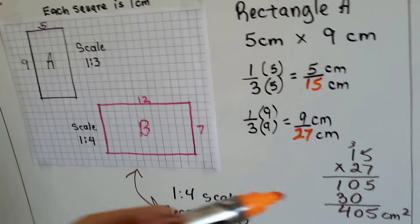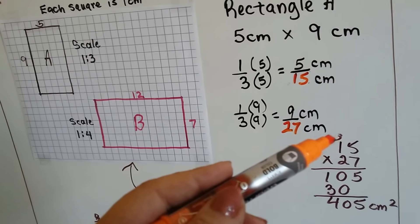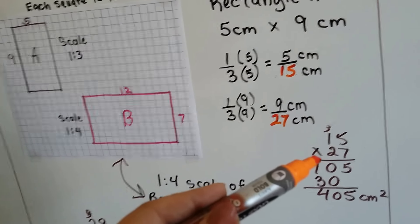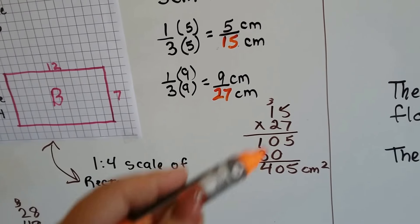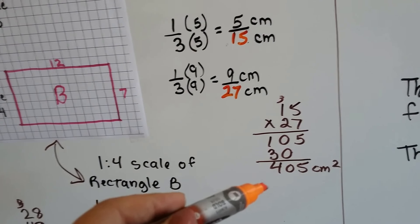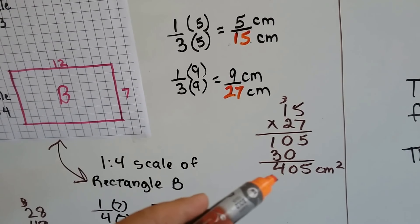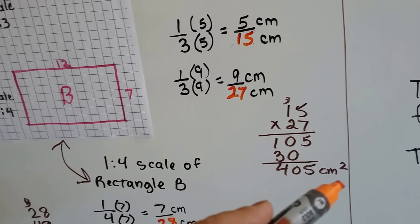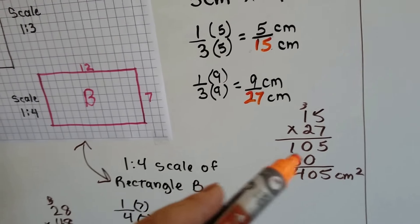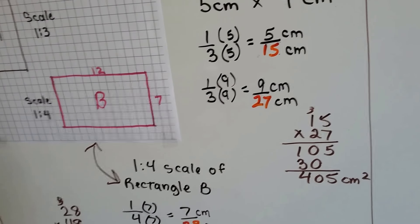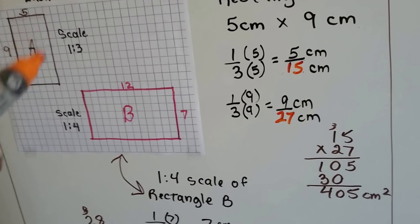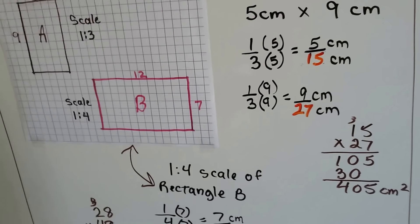So the actual size would be fifteen centimeters by twenty-seven centimeters. To find the area, we multiply fifteen by twenty-seven and get four hundred and five centimeters squared. It's really important to put that little two up there as the exponent, because the units are squared.